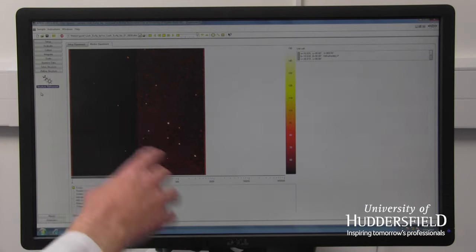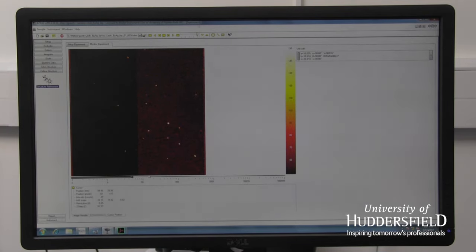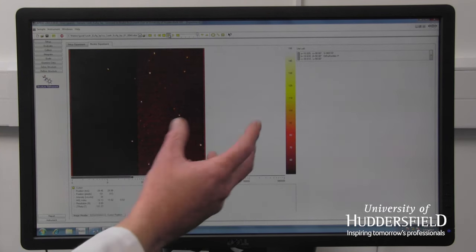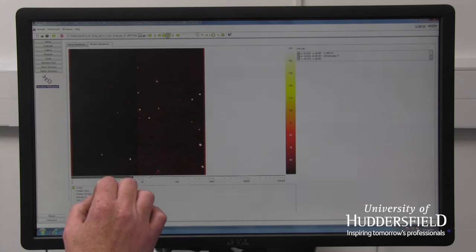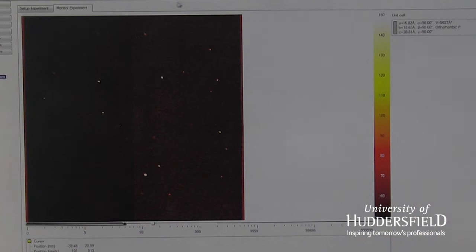But you don't just get one picture, you get many. We get thousands and thousands of images. Image after image. What we're doing is we're rotating the crystal, taking a picture, rotating the crystal, and taking the picture. And we're getting this pattern here.